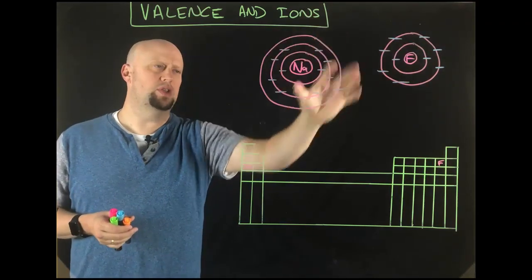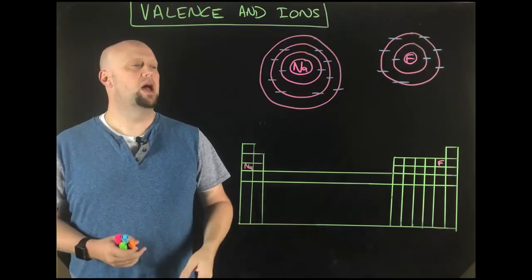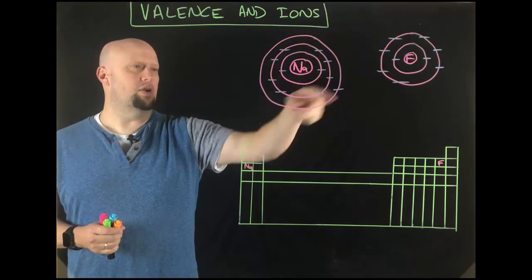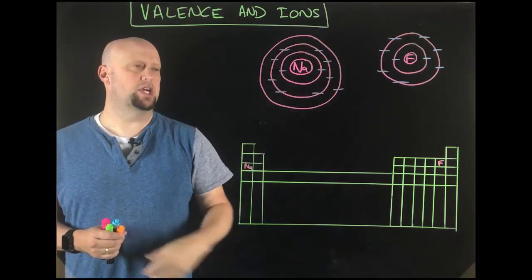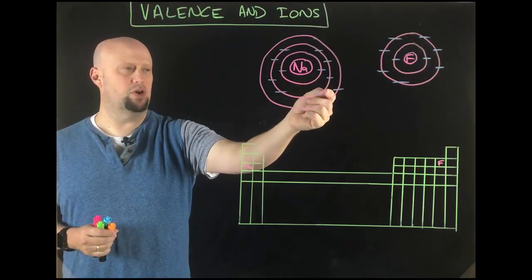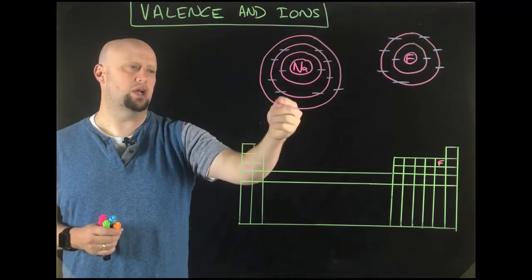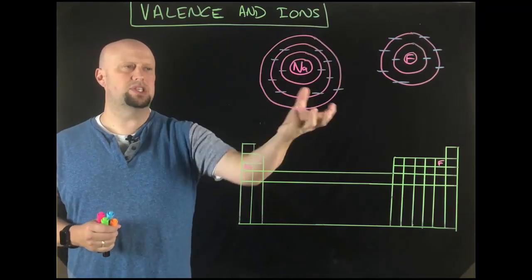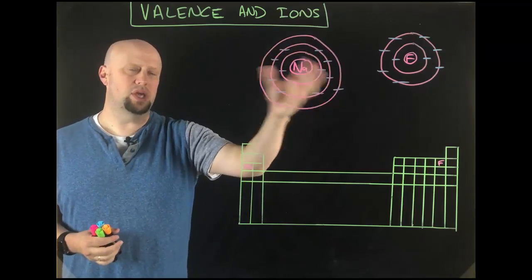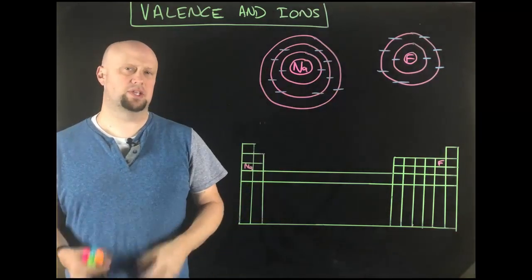If we drew these things according to a Bohr model — and of course we don't draw things according to the Bohr model most of the time — on your Bohr model, your outermost energy level: for sodium, the first energy level is completely full, the second energy level is completely full, and the third level has one electron in it. So sodium in its normal natural state with all 11 electrons has one valence electron.